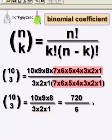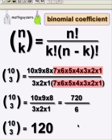Go ahead and divide 720 by six. You're done. There are 120 different three topping pizzas from a choice of ten toppings. MGZ out.